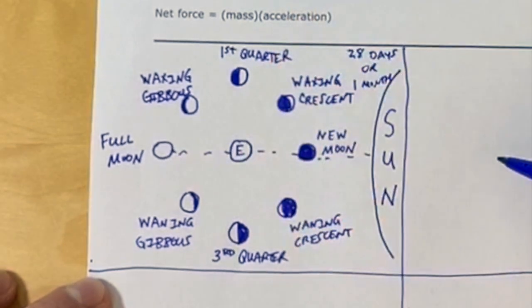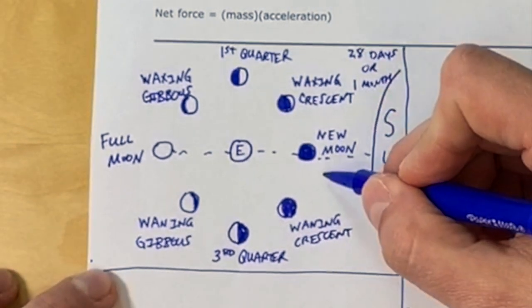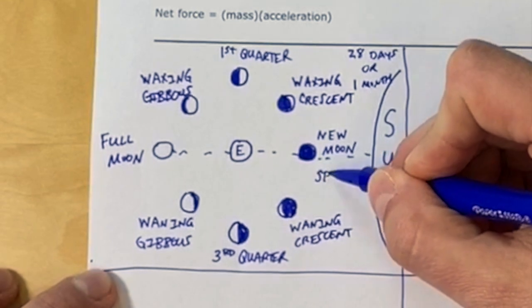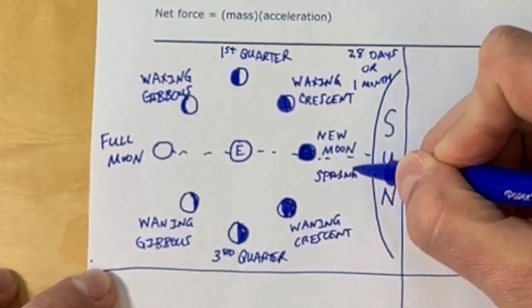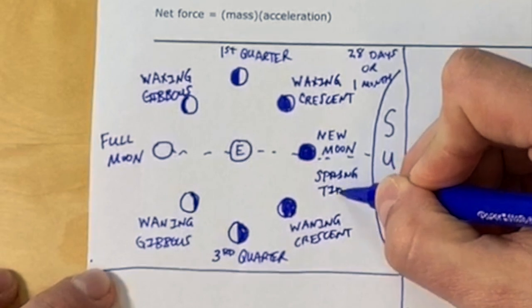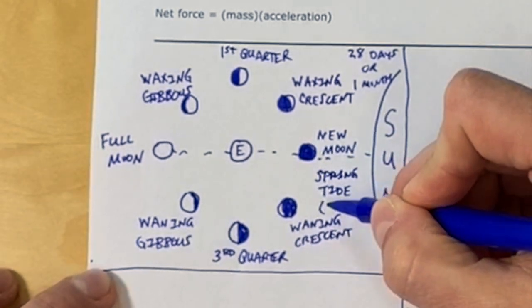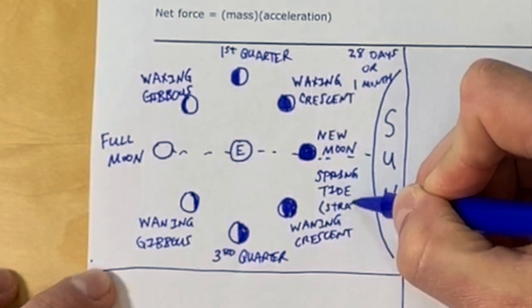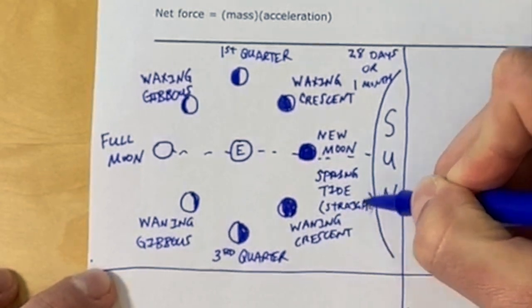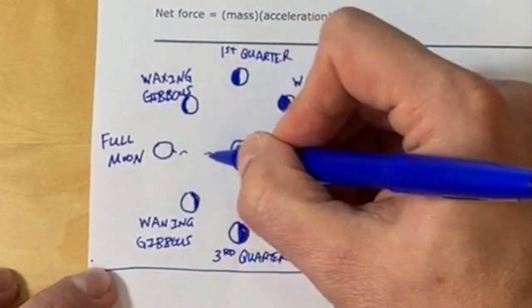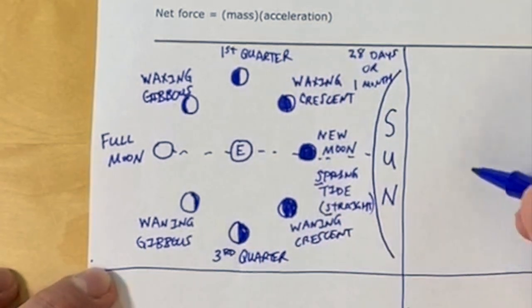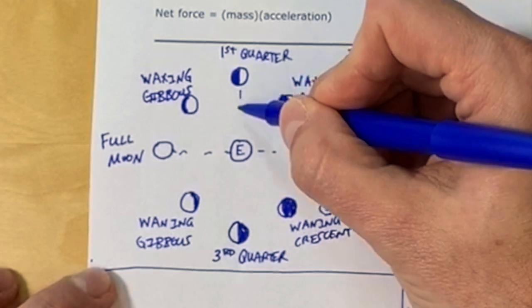Now we're going to look at the tides. We're going to draw a straight line from the sun, through the new moon, earth, and full moon. And this is called a spring tide. One easy way to remember this is the S in spring, and there's also an S in the word straight. So spring and straight means the sun, earth, and moon are lined up in a straight line.